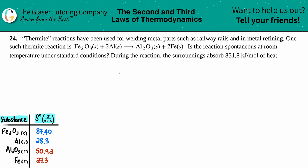Number 24: thermite reactions have been used for welding metal parts such as railway rails. One such thermite reaction is Fe2O3(s) + 2Al(s) → Al2O3(s) + 2Fe(s). The question asks: is this reaction spontaneous at room temperature under standard conditions? During the reaction, the surroundings absorb 851.8 kilojoules per mole of heat.